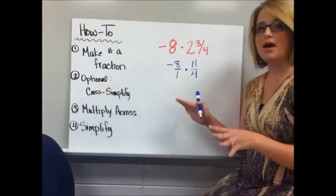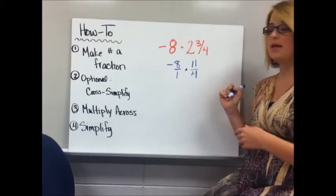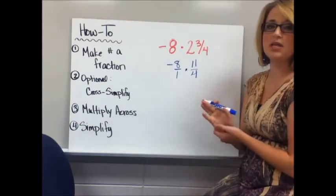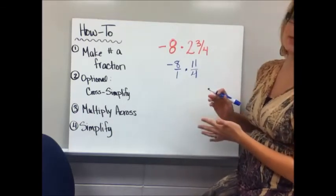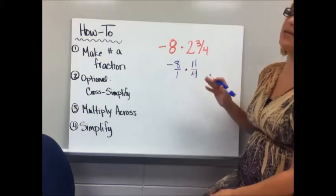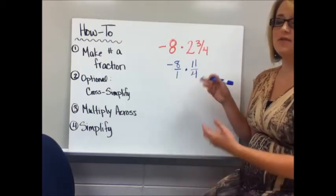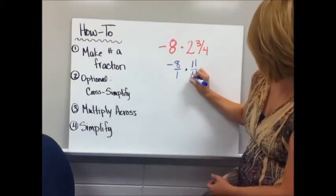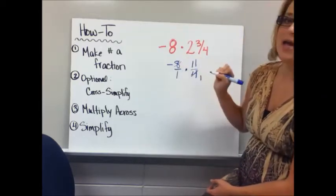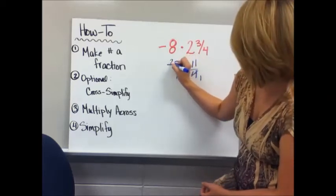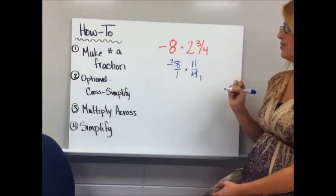Second step is optional. You don't have to do this, however I recommend it because it's a lot easier when you're dealing with smaller numbers. You can cross-simplify, which means look diagonally and see if there are common factors. If you look at 8 and 4, you see that 4 is a common factor, and I can reduce 4 divided by 4 is 1, 8 divided by 4 is 2. So I have cross-simplified.